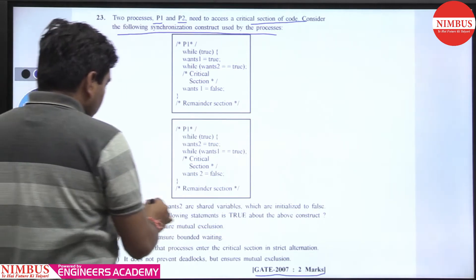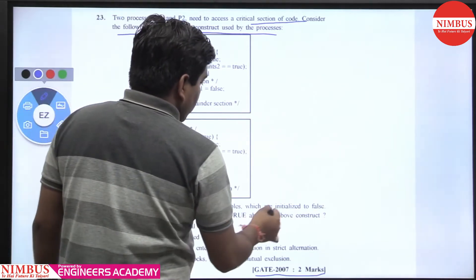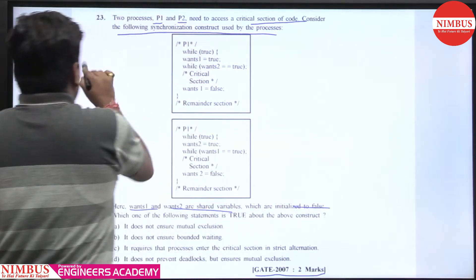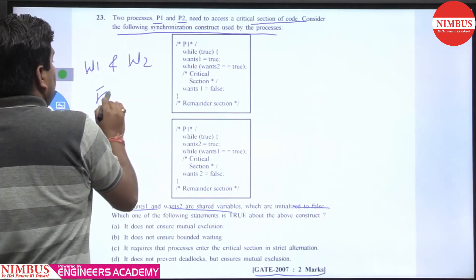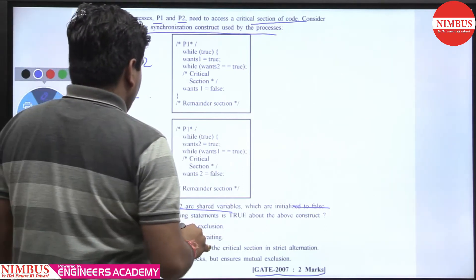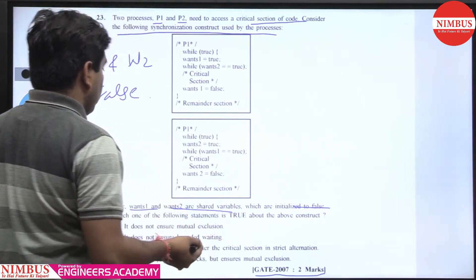Here, wants1 and wants2 are the shared variables which are initialized to false. Both are false, then which one of the following statements is true about the above construct.